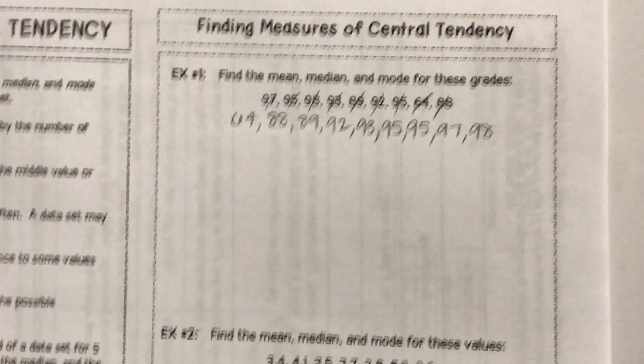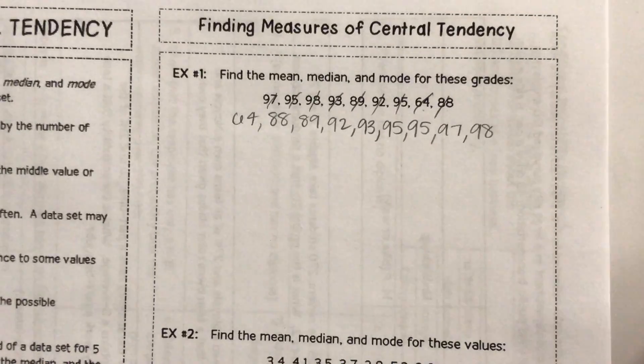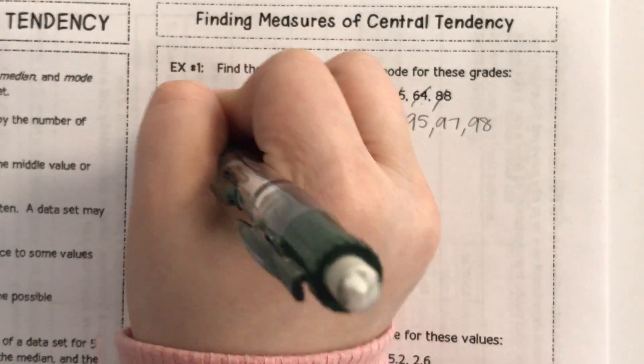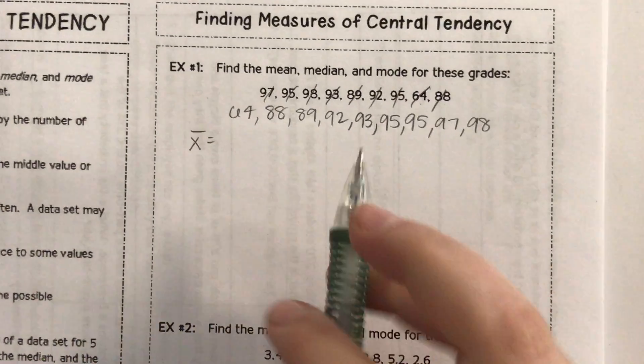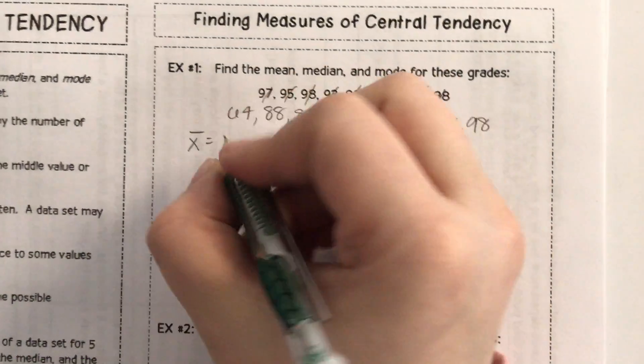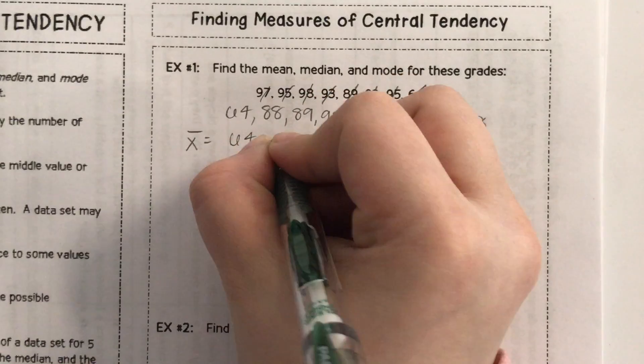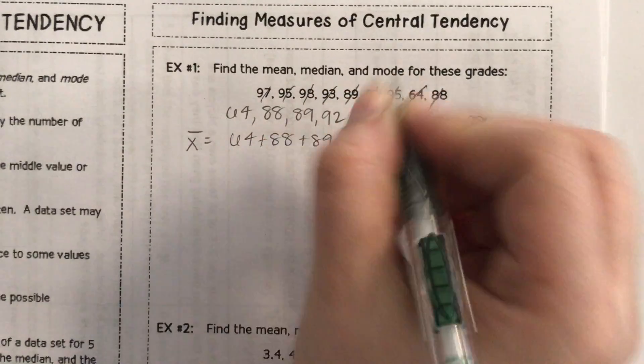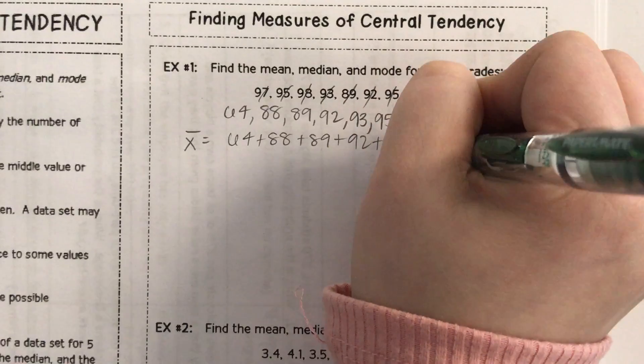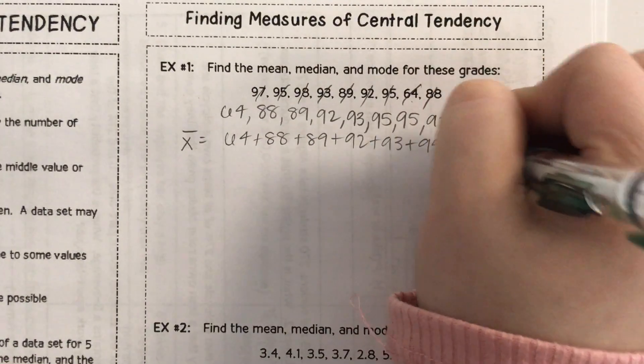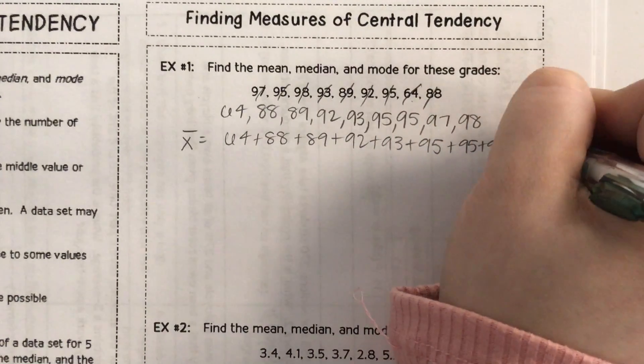Now we can find the mean, median, and mode. So mean, remember, is x bar. I'm going to add all of these up and divide by how many there are. So for sake of argument, we're going to write it out. 64 plus 88 plus 89 plus 92 plus 93 plus 95 plus 95 plus 97 plus 98.